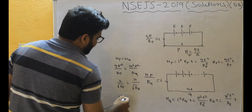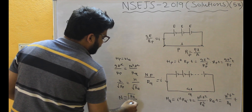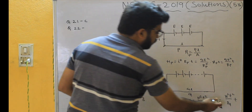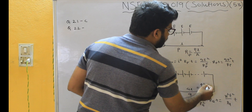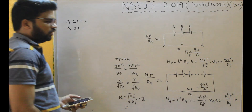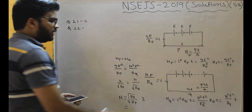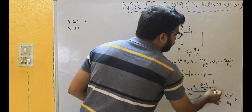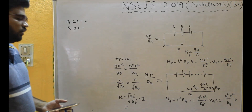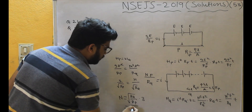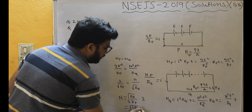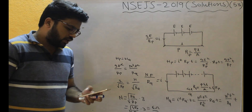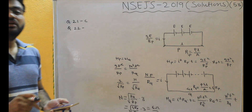We want N, so N = 3·√(R_Q/R_P). Now R_Q = ρ·4L/A and R_P = ρL/A, so R_Q = 4·R_P. Substituting: N = 3·√(4R_P/R_P) = 3·√4 = 3·2 = 6. So the answer for question 22 is option B, N = 6.